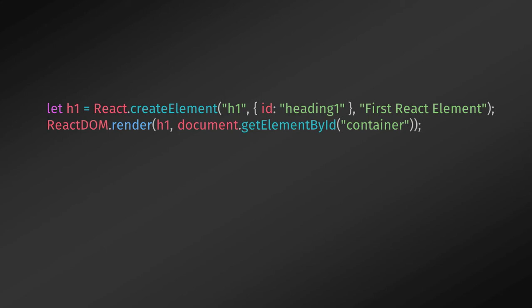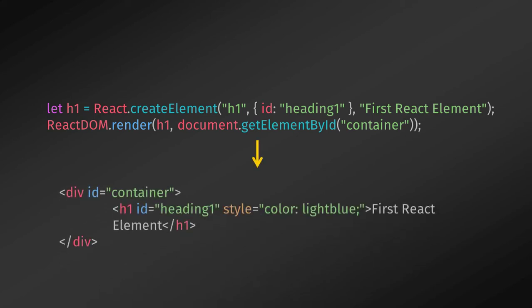Now I want to render this React element in the DOM, so I'll call ReactDOM.render. On the first argument I'll pass h1 — our React element — and in the second argument I'll specify the parent node where I want to insert it, using document.getElementById and specifying the id of the div element. When you execute this, the output should show your h1 heading tag inside the div element.